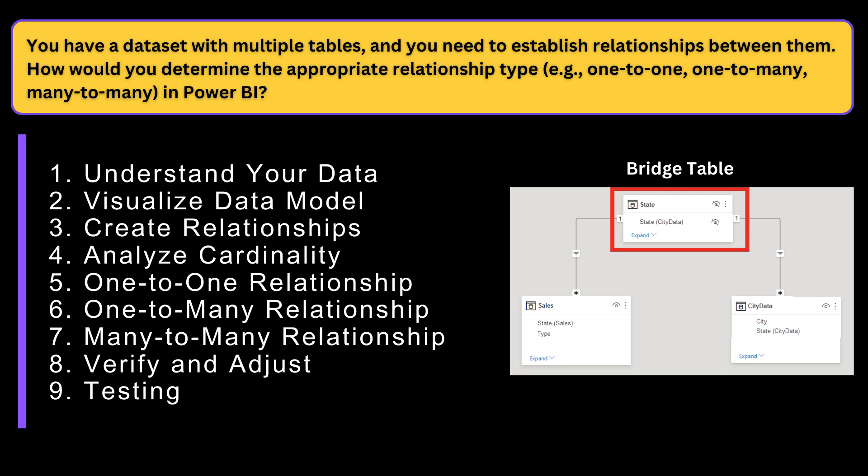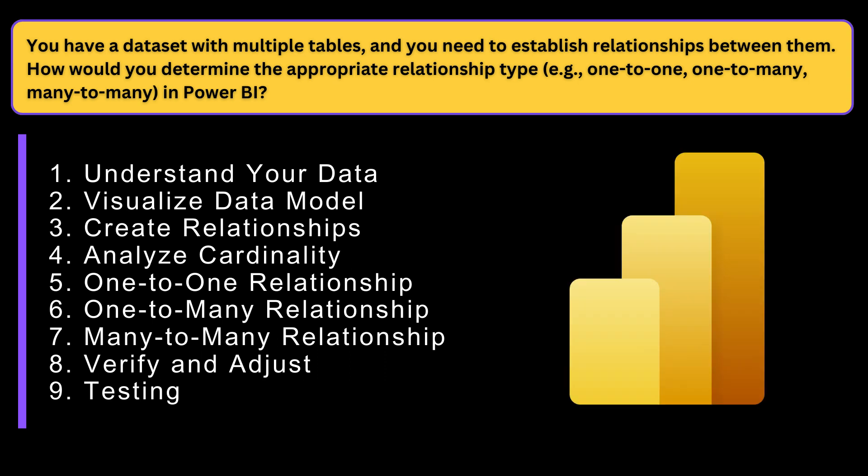The second-to-last point is to verify and adjust. After determining the relationships, verify that they accurately represent the data, and adjust them based on your analysis and requirements if needed. The last point is testing — test your relationships by creating visualizations and reports to ensure they behave correctly. By following these steps and understanding the nature of your data, you can effectively determine the appropriate relationship type in Power BI.